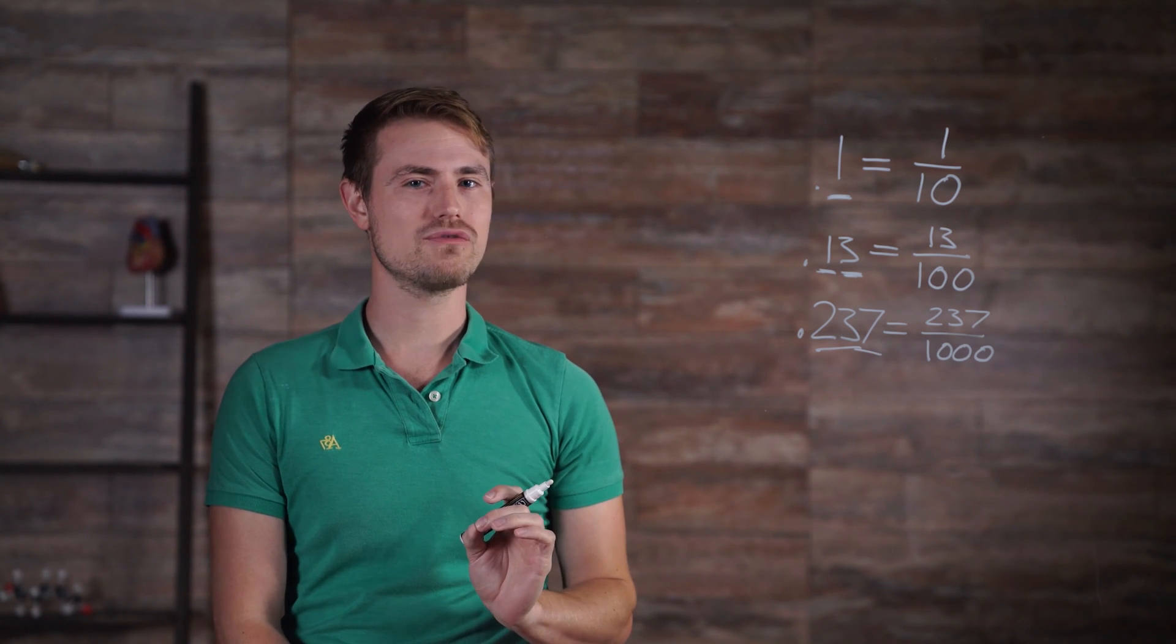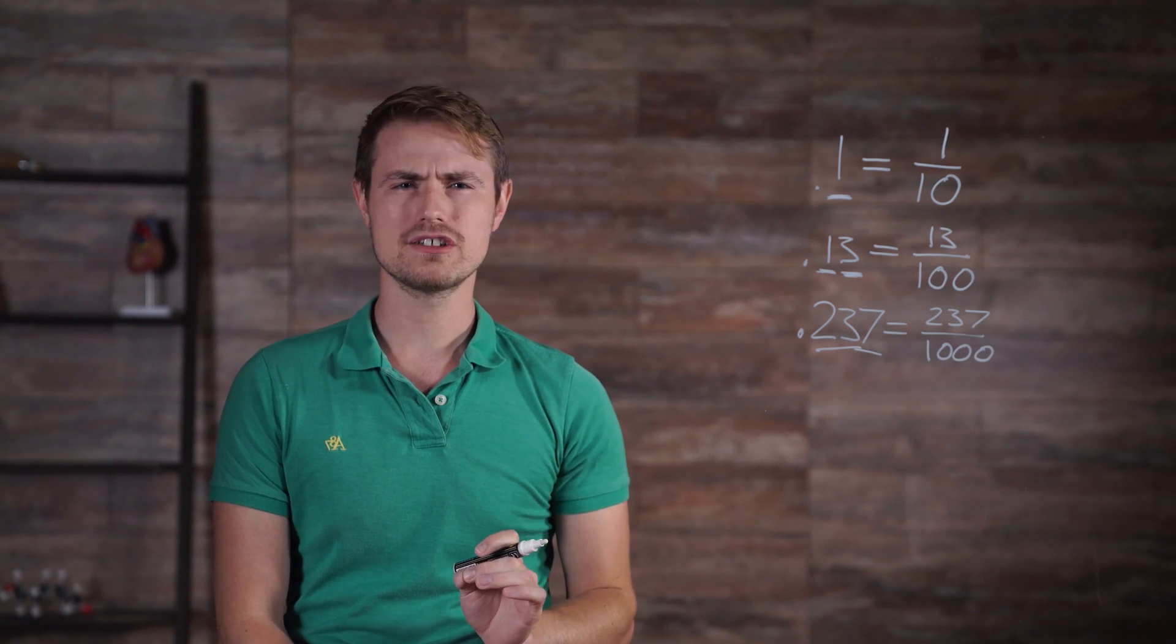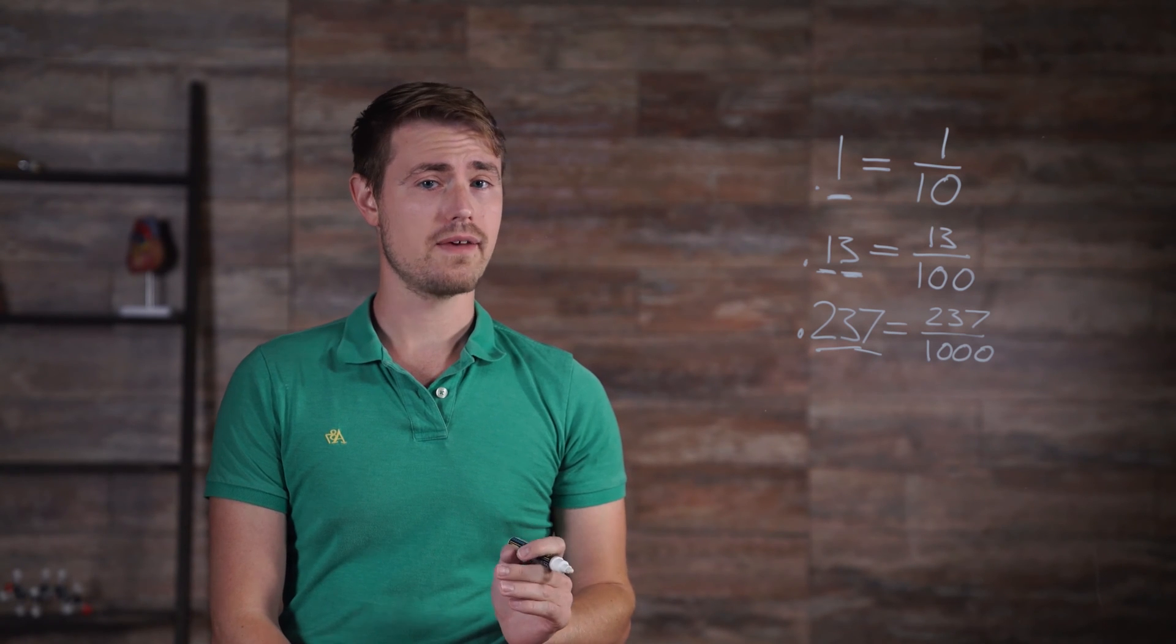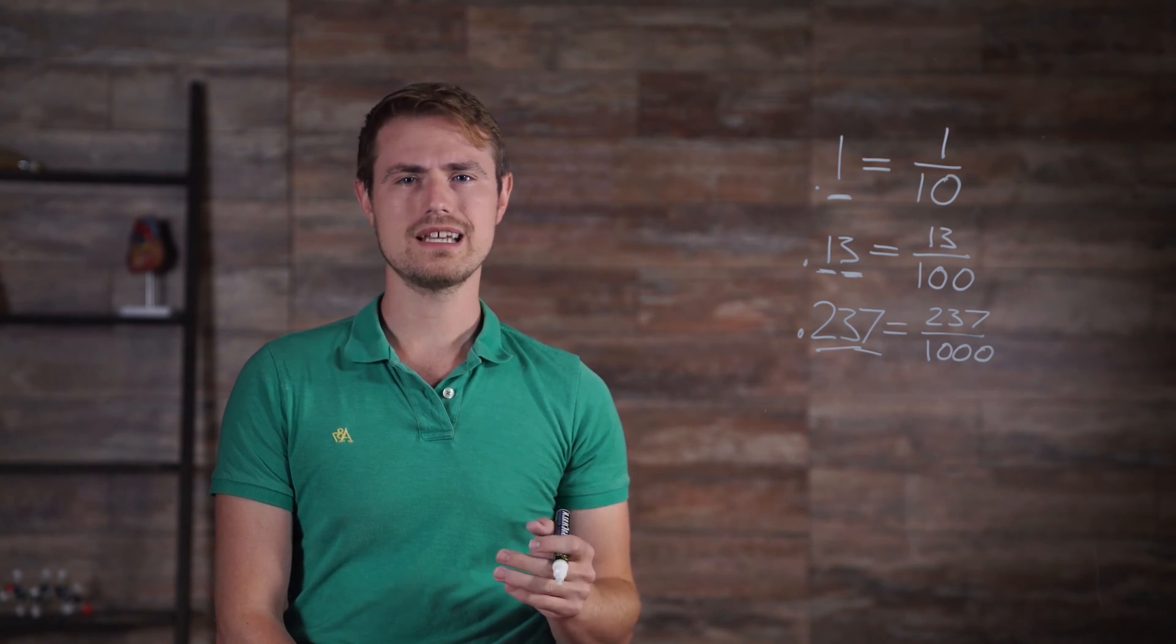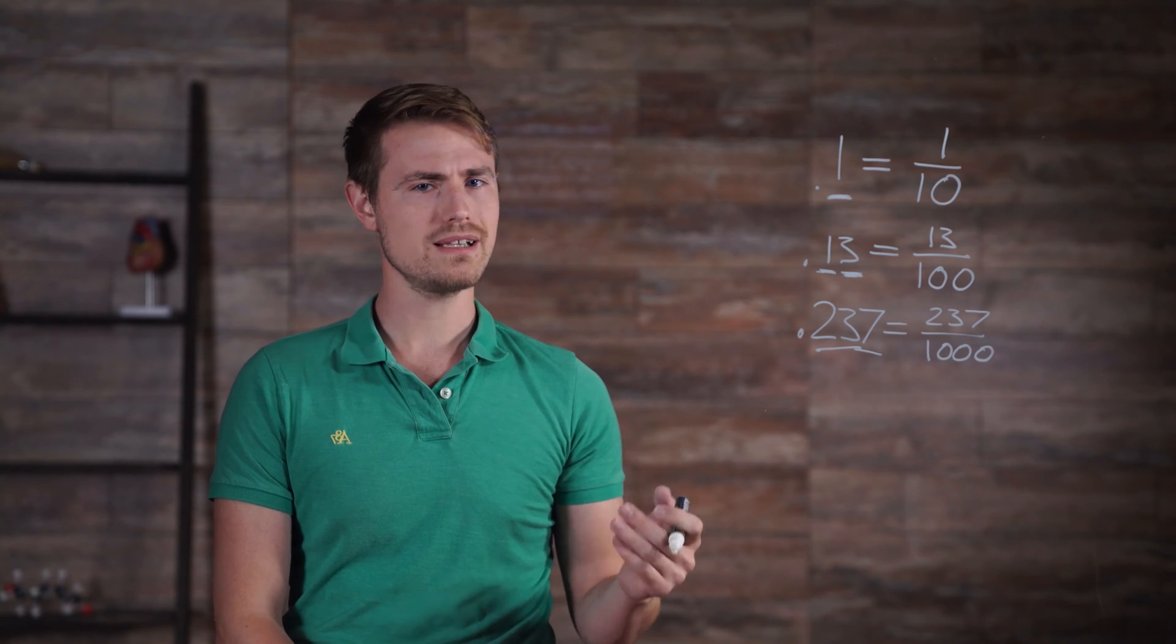These decimals can be written as fractions, so they are considered rational. Other decimals have repeating patterns. These are also considered rational because they can be expressed as a fraction based on the following proof.